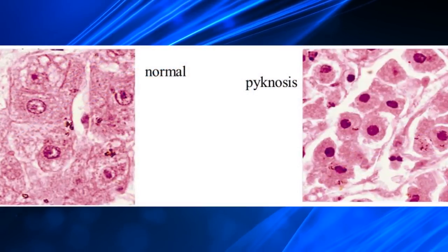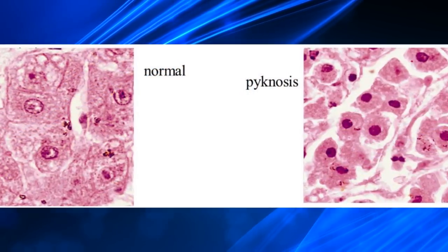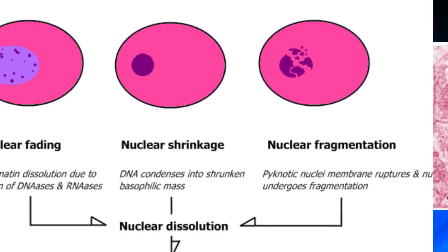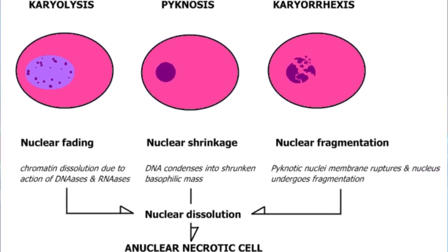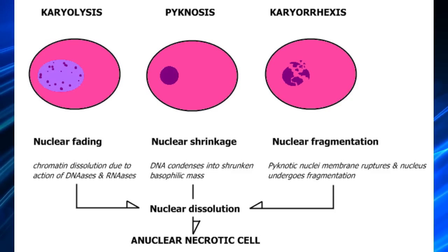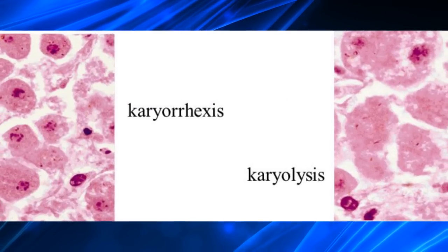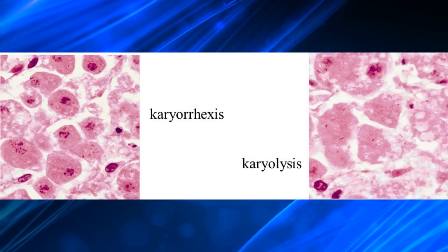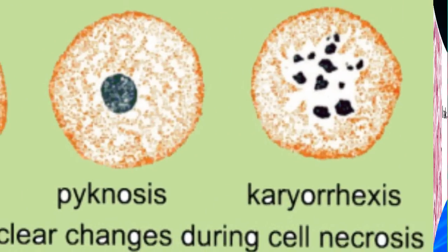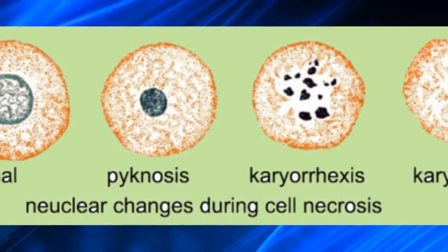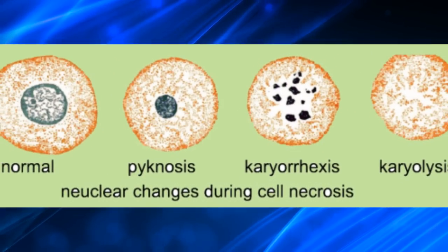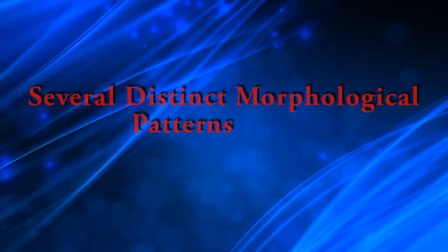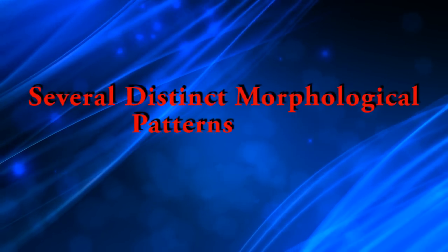Pyknosis is characterized by nuclear shrinkage and increased basophilia; the DNA condenses into a solid shrunken mass. In karyorrhexis, the pyknotic nucleus undergoes fragmentation. In karyolysis, the basophilia of the chromatin fades. There are several morphologically distinct patterns of tissue necrosis, which may provide clues about the underlying cause.